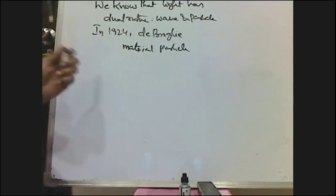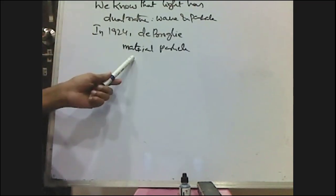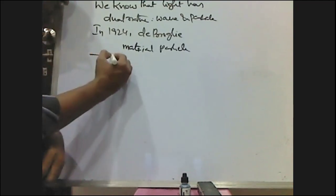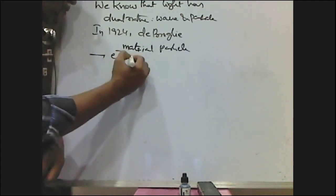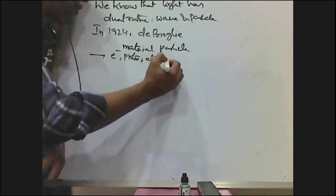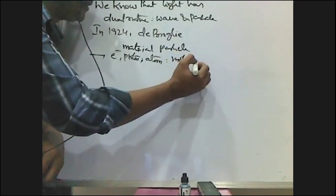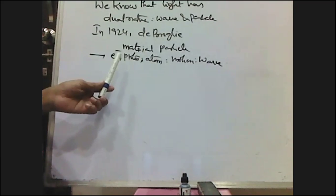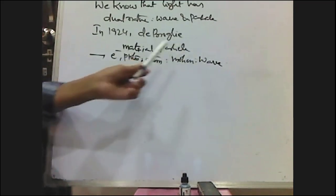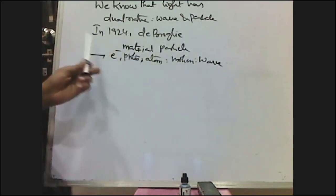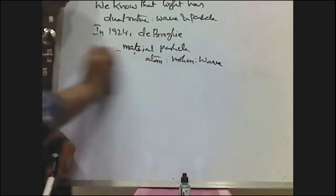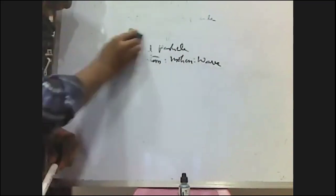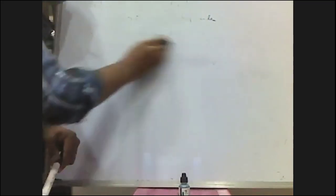As per De Broglie's dual nature of matter, electrons, protons, and even atoms, when they are in motion, show wave properties along with particle properties. He derived an expression to calculate the wavelength of these particles which exhibit dual nature.